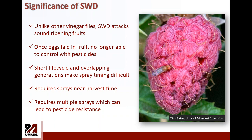First, you have multiple generations that overlap throughout the summer, resulting in very high populations in late July and during August. Second, growers need to spray insecticides very close to harvest, meaning whatever you choose to spray needs to have a short pre-harvest interval. Third, because growers have to spray frequently against spotted wing drosophila, there is a need to rotate materials to minimize resistance, and these materials also need to have short pre-harvest intervals.